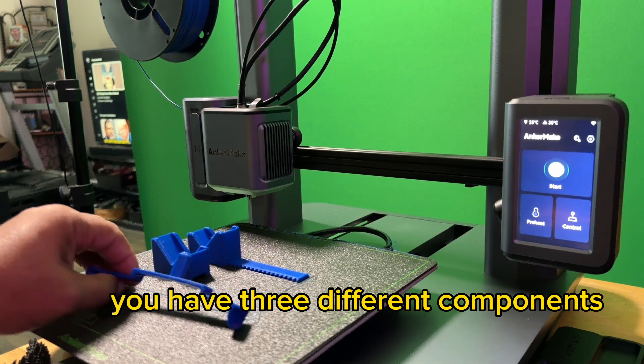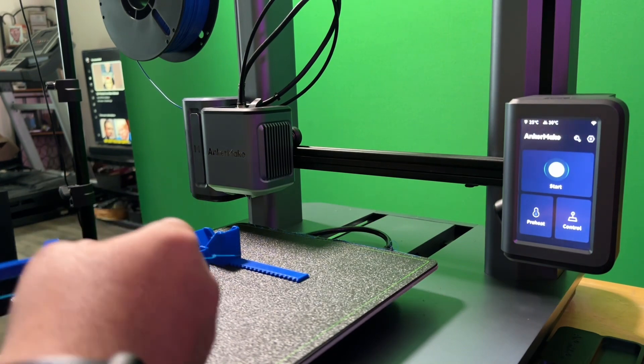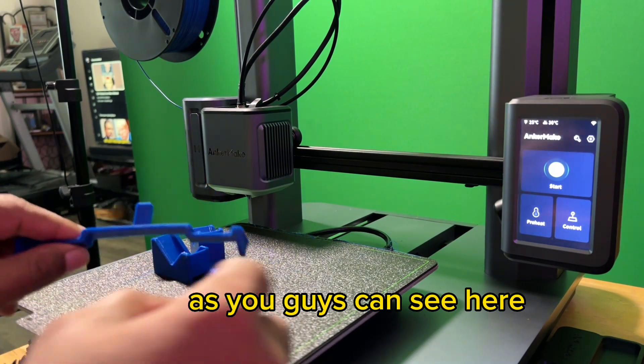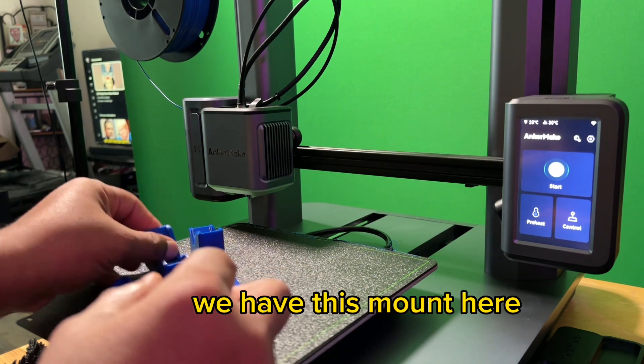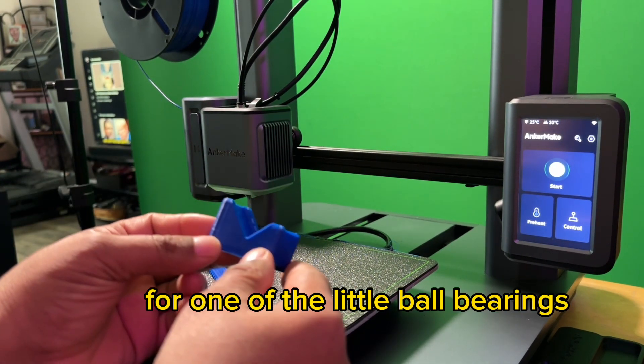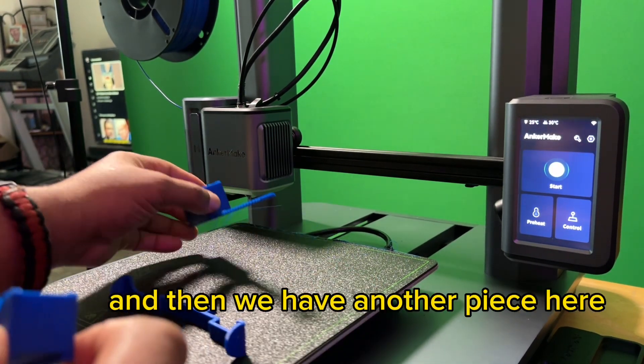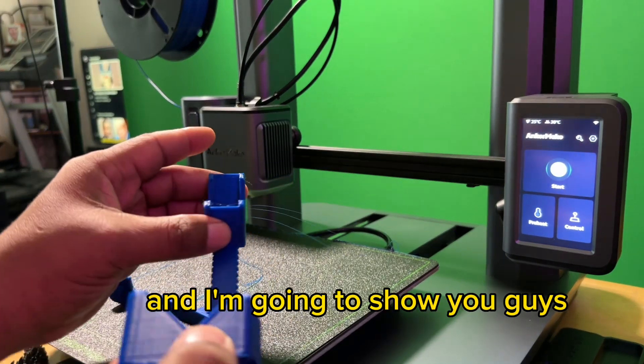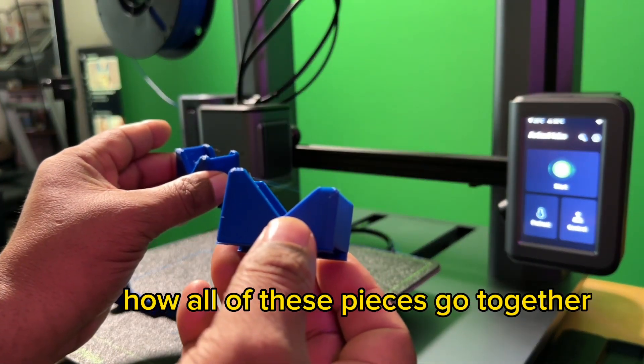So basically you have three different components. As you guys can see here, we have this base, we have this mount here for one of the little ball bearings, and then we have another piece here. And I'm going to show you guys how all of these pieces go together.